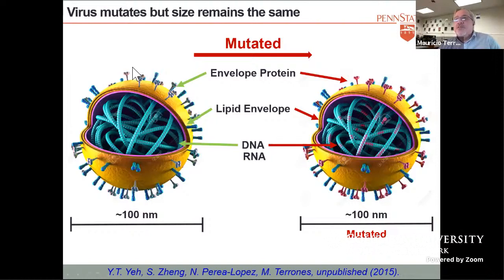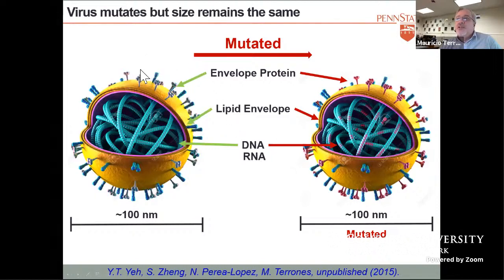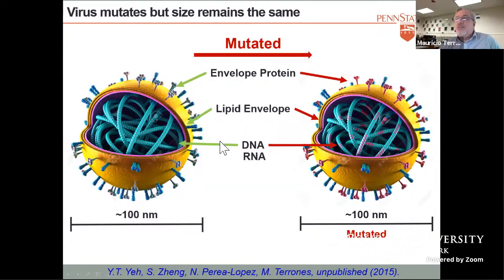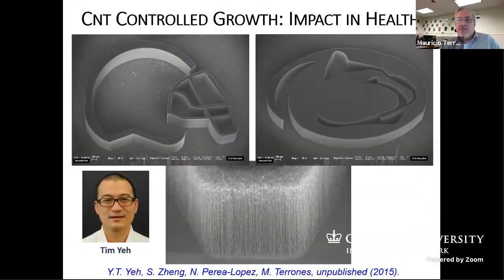When viruses mutate and you have different variants or mutations, the envelope protein of the virus starts changing and your antibodies are no longer effective. That's a problem. Sometimes you need to develop antibodies to identify them, for instance by PCR. But if you can trap them without the label, without the antibodies — that's what we're trying to do. We're trapping new viruses and concentrating them without antibodies.